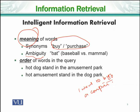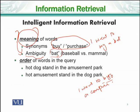Next is ambiguity. If I write 'I want to buy a bat', an intelligent IR system needs to understand that I don't want to buy a flying animal, but rather a ball bat for cricket or baseball. Then there is word order. For example, 'hot dogs stand in the amusement park' versus 'hot dogs stand in the dog park' — we need to understand that word order is important. 'Hot dogs' is something to eat, but in 'dog park', the order changes the meaning. The order of words matters for the query.